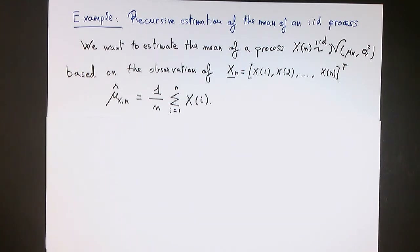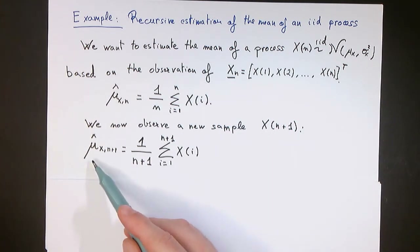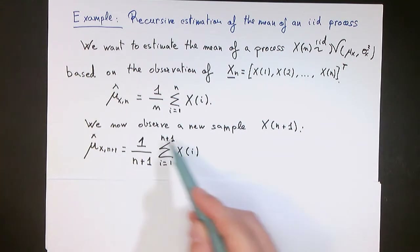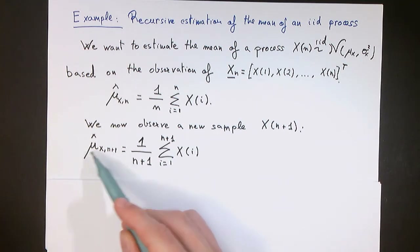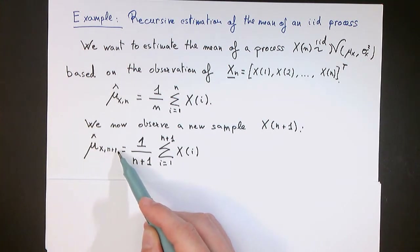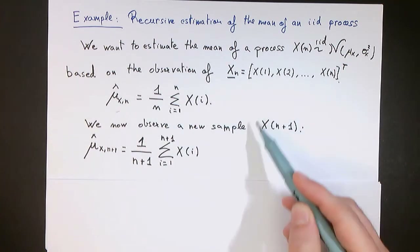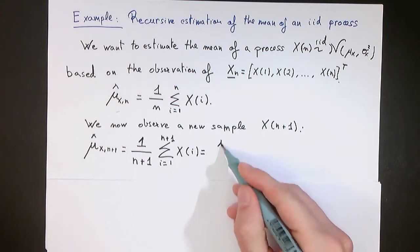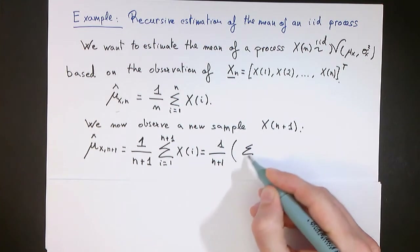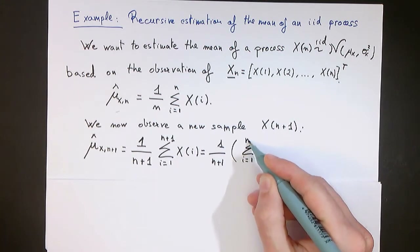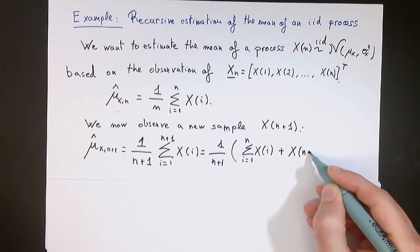Imagine now that we let time pass and at time n plus 1 we observe a new sample of the process x, x of n plus 1. We could recompute our sample average estimator by simply taking the average of the n plus 1 samples now available. Let's see how we can rewrite this estimator of the sample mean at time n plus 1 as simply a function of the previous estimate of the mean at time n and the new observation x of n plus 1. To do so, I will take this sum and separate the last element, keeping a sum of the first n samples and setting aside the last observation x of n plus 1.